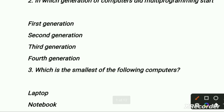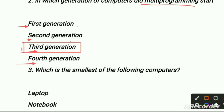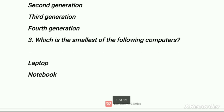In which generation of computers did multiprogramming start? First option is first generation, second generation, third generation, and fourth generation. First generation is related to machine language. Second generation is related to assembly language. Third generation is related to procedural language — procedural language means multiprogramming language. Fourth generation is related to non-procedural language. So our right option is third generation.